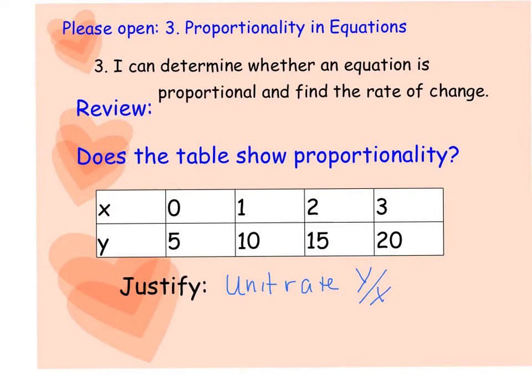It's always our dependent variable divided by the independent variable. So, I'm going to skip this 0, 1, and go to this. Here, our unit rate is 10 over 1. Here, 15 over 2, that unit rate comes to 7.5 over 1. Already I know that the unit rates are not the same.